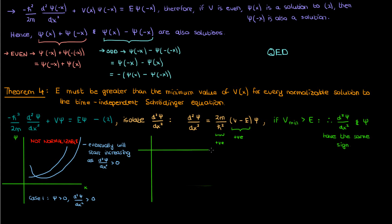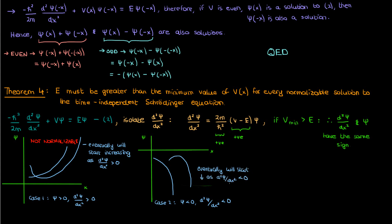If ψ is negative, its second derivative is also negative, so ψ is concave down and its derivative is constantly decreasing — ψ gets further and further from the x-axis. Since ψ must approach 0 at ±∞ to be normalizable, this function is also not normalizable. Even if the derivative starts out positive, it will eventually decrease enough that ψ falls without bound.